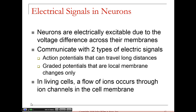Electrical signals in neurons. We're going to go back over some of these electrical signalings that we find in neurons. Remember, neurons are one of two different types of cells in the body that are capable of responding with an electrical signal — they are electrically excitable. Muscle cells are the other type of cell that are electrically excitable.